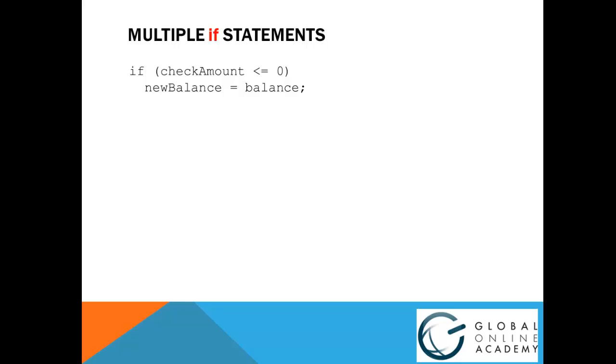Sometimes we have more than one condition we want to check. For example, in this code snippet, we first check if the check amount is less than or equal to 0. If so, we're going to ignore the check since a negative check makes no sense. Next, we'll still check to see if the amount is less than the current balance, in which case we'll subtract the amount from the balance.